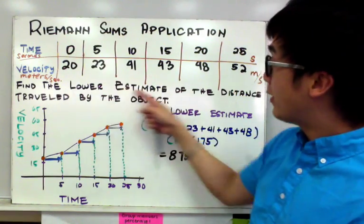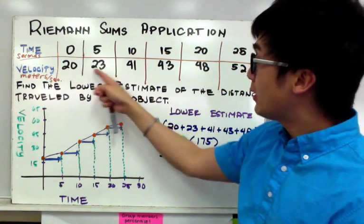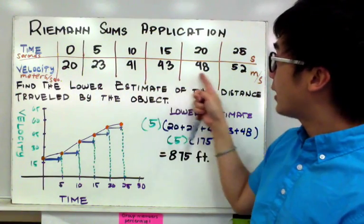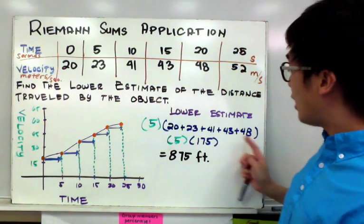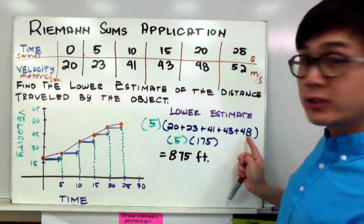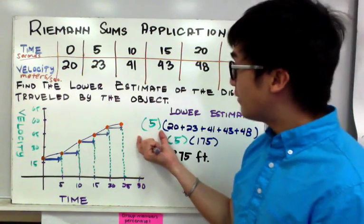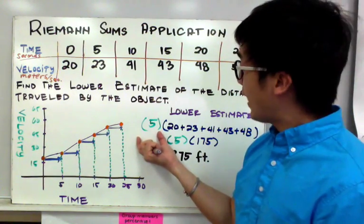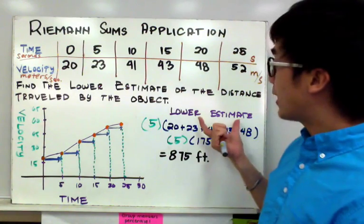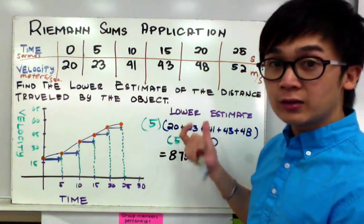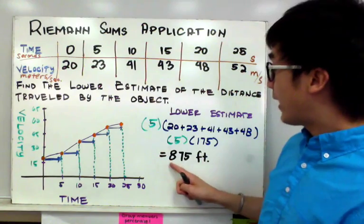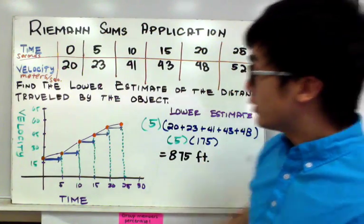Since it's the lower estimate, we use 20, 23, 41, 43, and 48, add them all up, and multiply by the consistent width of 5 seconds. This gives a lower estimated distance traveled by this object of 875 meters.